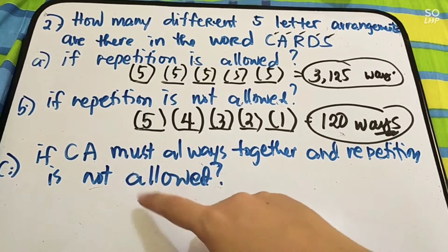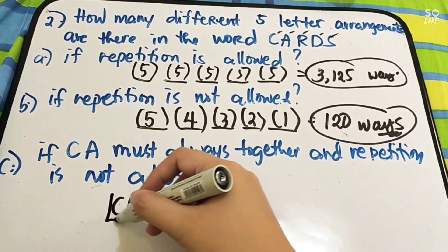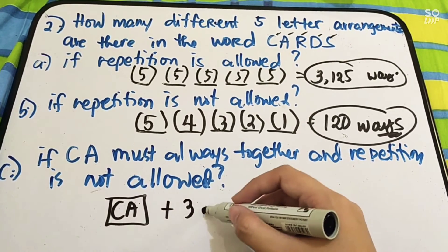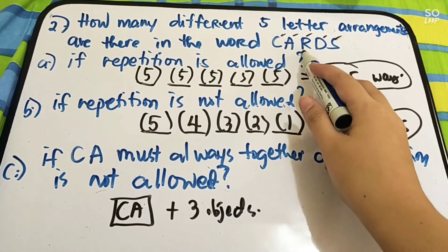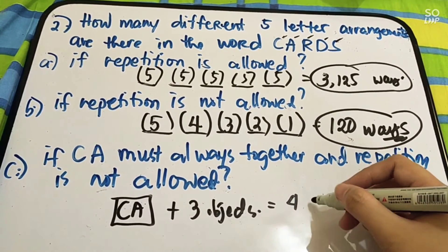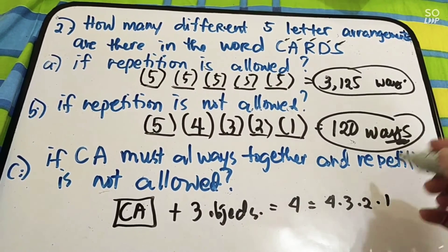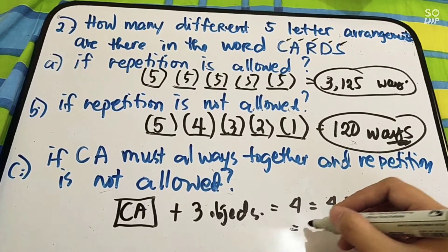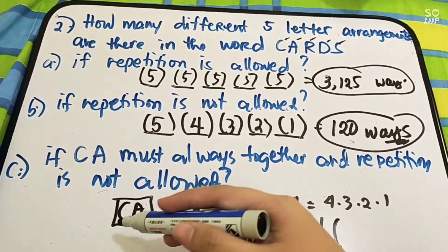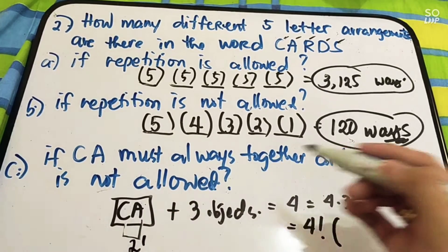Let's have letter C — if CA must always be together and repetition is not allowed. Sabi dito, si CA ay lagi magkasama, so we have CA as one object. Then ang matitira na lang is three objects: R, D, and S. So, one object plus three objects — ang involved nating objects ngayon is four. Since four objects, that is equal to four times three times two times one, which is four factorial — the permutations of the four objects. Is it clear?